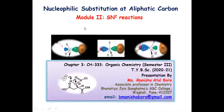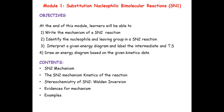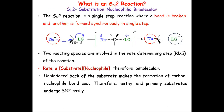Students, we are back with the second module of substitution at the aliphatic carbon. In the previous module we spoke about SN1 type of reactions, and in this second module we will be talking about SN2 type of reactions. We'll understand what is the SN2 reaction, how it takes place, the mechanism, the kinetic study, and the stereochemistry of the SN2 reaction, as well as the factors which affect the rate of SN2 reaction.